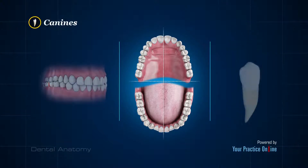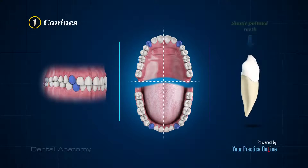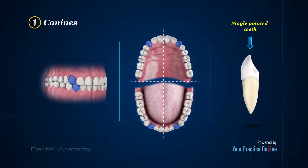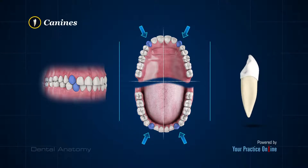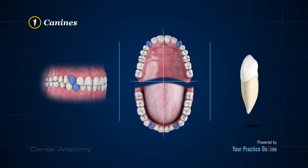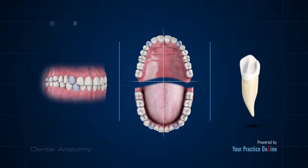Canines are single, pointed teeth. There is one canine present in each quadrant, at the side of the incisors. Canines help hold and tear food.